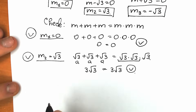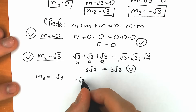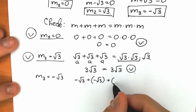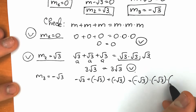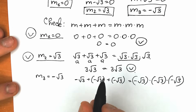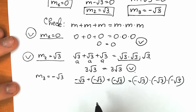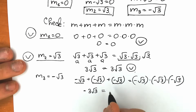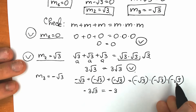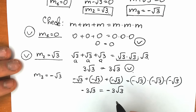Now let's check m₃ equals minus √3. On the left: minus √3 plus minus √3 plus minus √3 equals minus 3√3. On the right: minus √3 times minus √3 times minus √3 — three negatives multiply to give a negative, so (√3)(√3)(√3) = 3√3 with a negative sign gives minus 3√3. Both sides equal minus 3√3 — correct!